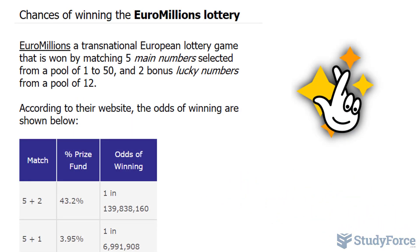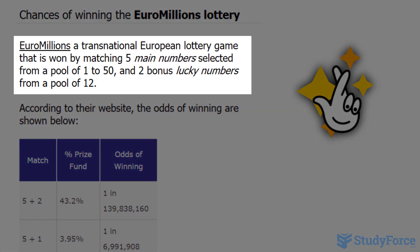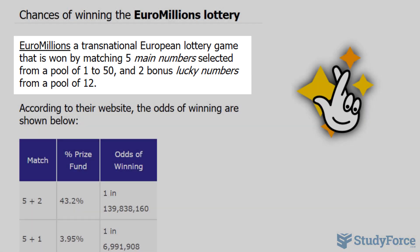This video discusses your mathematical chances of winning the Euromillions lottery. For those that don't know, Euromillions is a transnational European lottery game that is won by matching 5 main numbers selected from a pool of 1 to 50 and 2 bonus lucky numbers from a pool of 1 to 12.